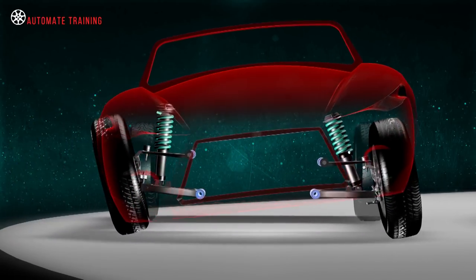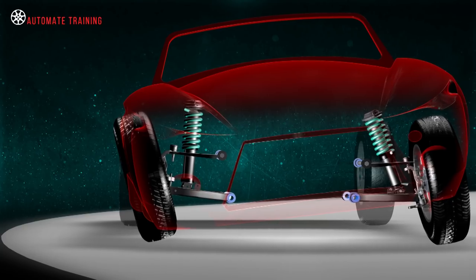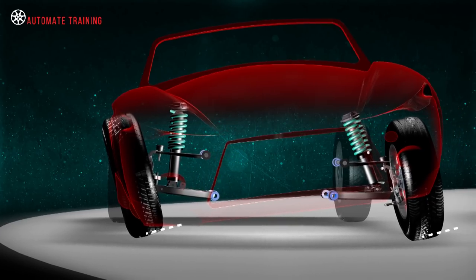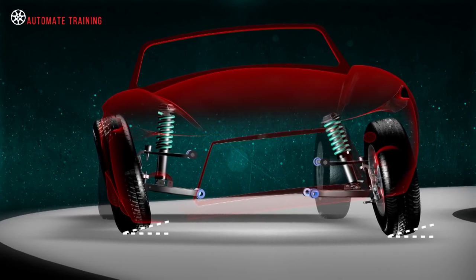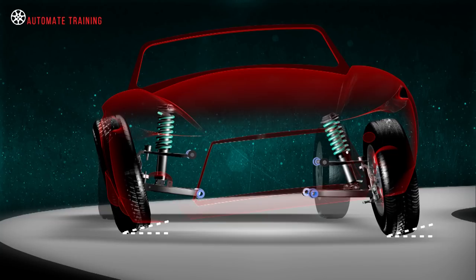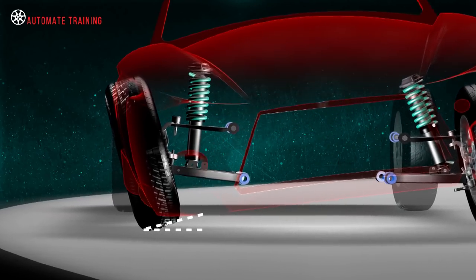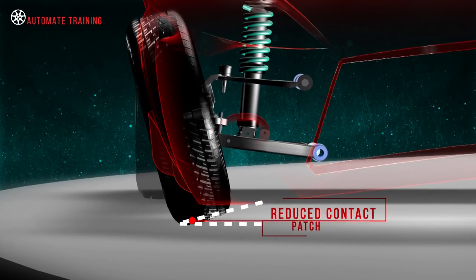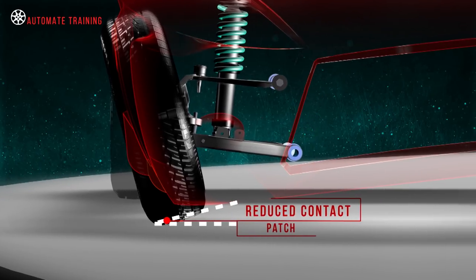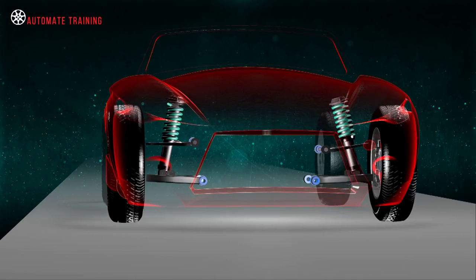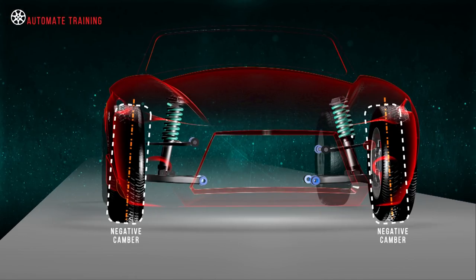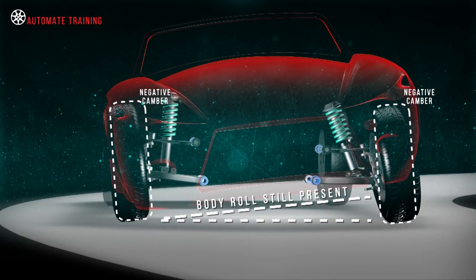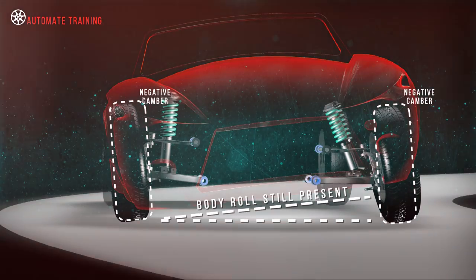Even though each suspension unit allows the road wheel to be somewhat independent from the vehicle's body, cornering forces and the resulting body roll affect the angle of the road wheels. Large amounts of body roll will cause the wheels to tilt away from the corner, which lifts the edge of the tire and reduces its contact patch. While we can compensate for this by adding negative camber, there is a practical limit to this in a passenger vehicle, which unfortunately is not enough in most cases to compensate for the body roll.